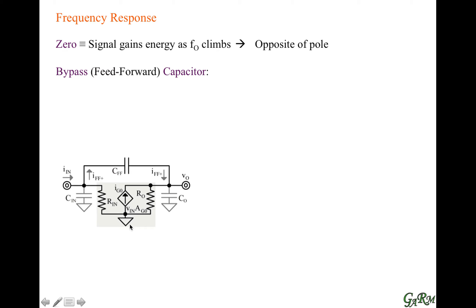In this particular circuit, in the gray region, what we have is the model of an amplifier with an input resistance and a Norton output — a transconductance gain into an output resistance. What we want to show here is the effect of adding a capacitor across this amplifier. This is a bypass path because the capacitor now offers an alternate path from the input to the output, basically feeding current to the output.